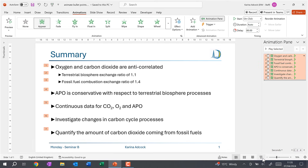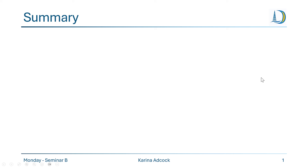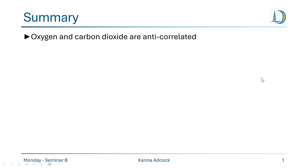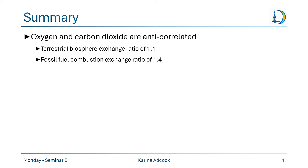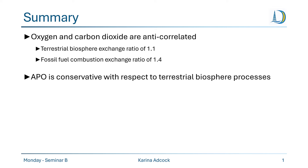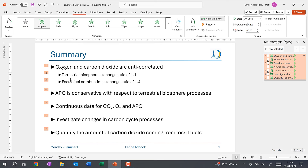Now when we look at the presentation, the first time I click the main bullet point will come in, and then the next two clicks will bring in each of the sub bullet points in turn, as the two sub bullet points now have their own numbers.